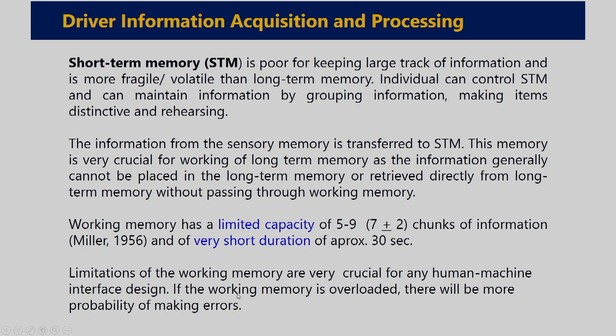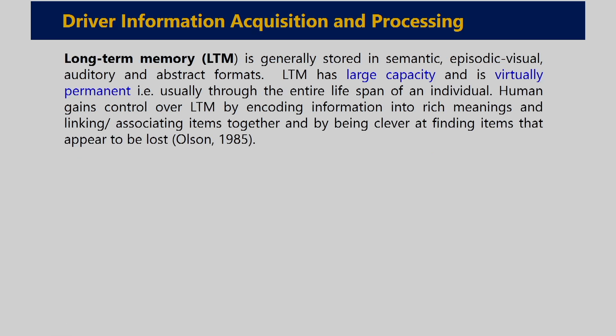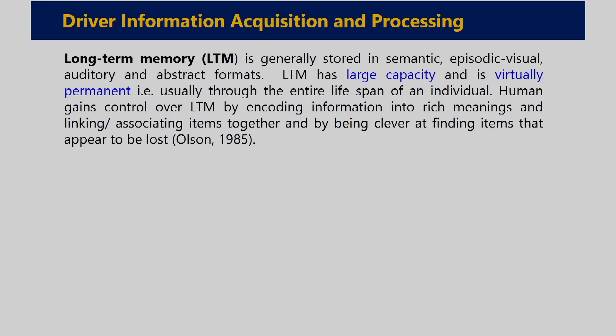If the working memory is overloaded, there will be a probability of more mistakes or errors. Limitations of working memory are very crucial for any human-machine interface design. In comparison, long-term memory generally stores information in semantic and episodic format, has large capacity, and is virtually permanent — usually stored throughout the entire lifespan of an individual. Humans gain control over long-term memory by encoding information into rich meanings and linking or associating items together, and they can also retrieve seemingly lost information by associating it with other items stored in the brain.